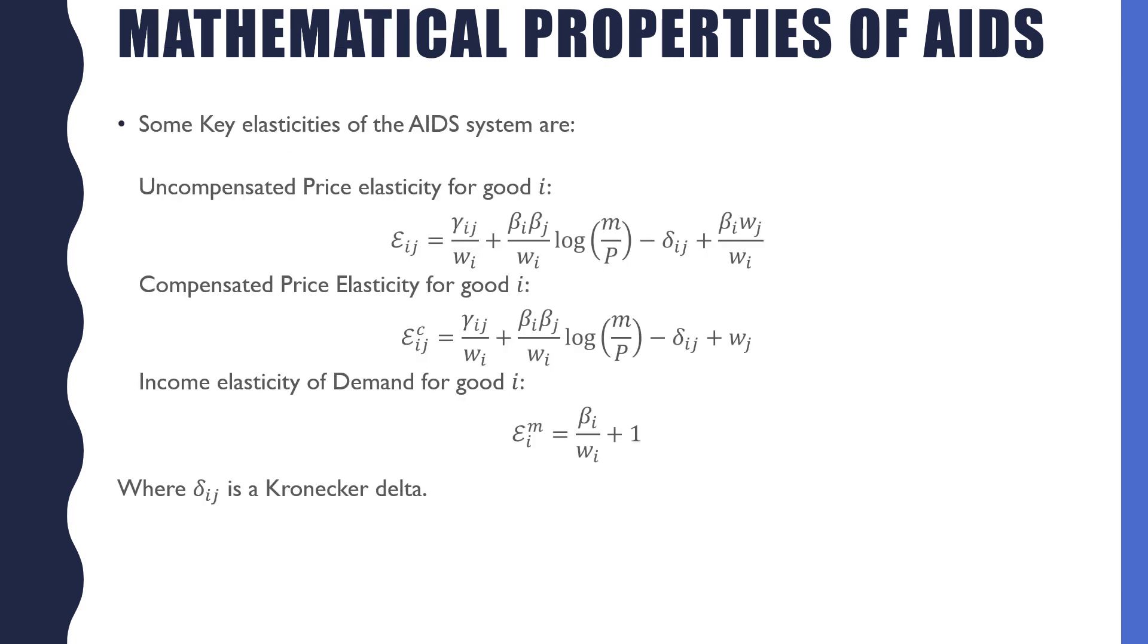For this last slide, I just wanted to show the uncompensated price elasticity for good i, the compensated price elasticity for good i, and the income elasticity of demand for good i in all these cases. I'm not going to really go into much detail of this because most of the variables in this are pretty recognizable, and we've gone over them in the other slides. Just the new variable that we have over here is our delta_ij, which is the Kronecker delta.